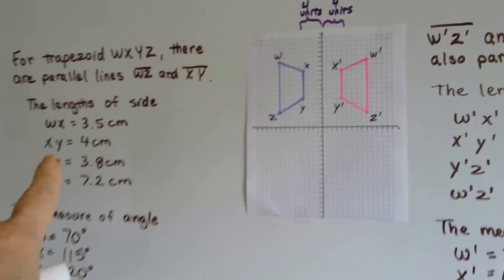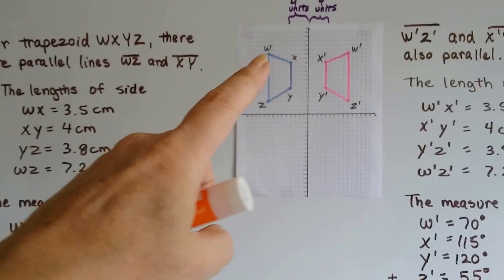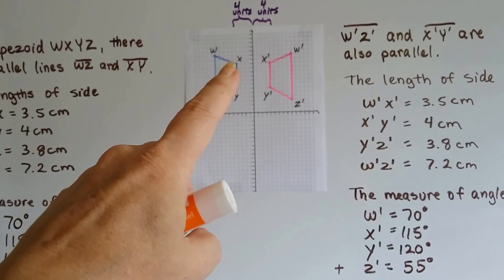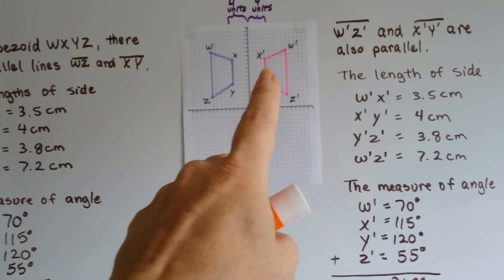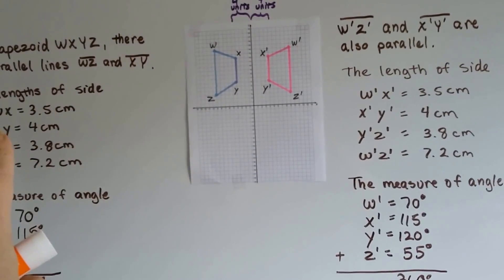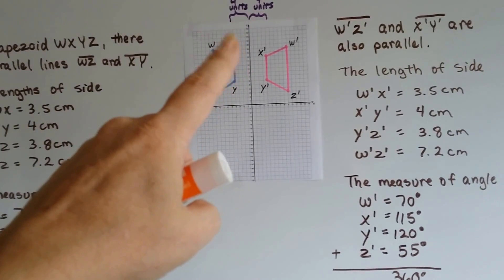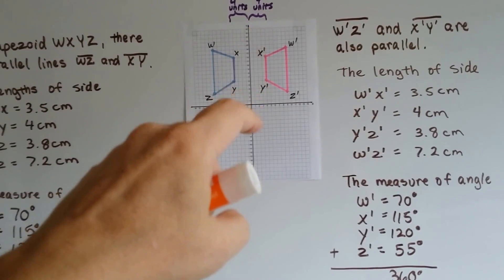The length of side W, X, Y right here is 3.5 centimeters when I measured it, and W prime, X prime is 3.5 centimeters. X, Y is 4 centimeters right here, and X prime, Y prime is 4 centimeters.